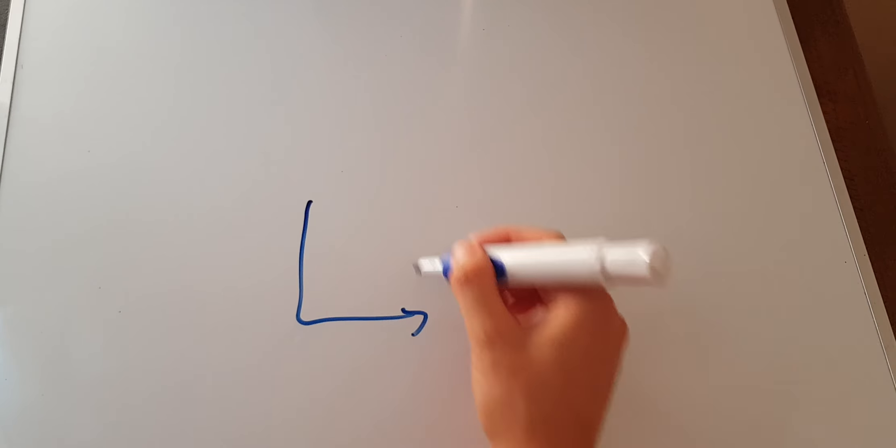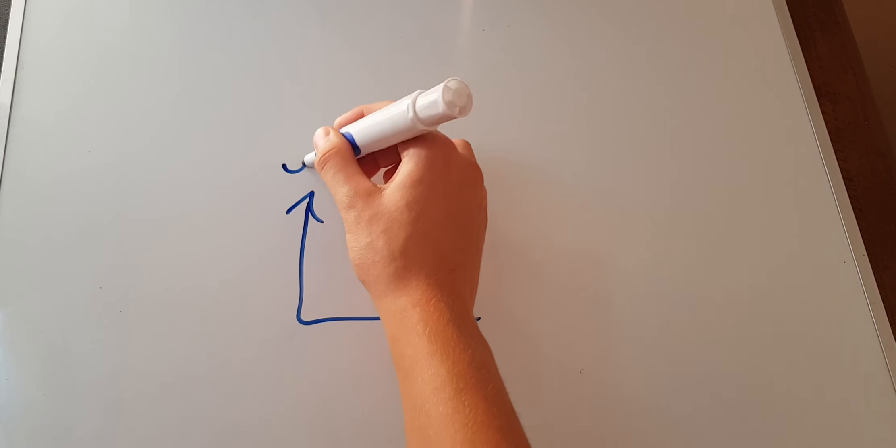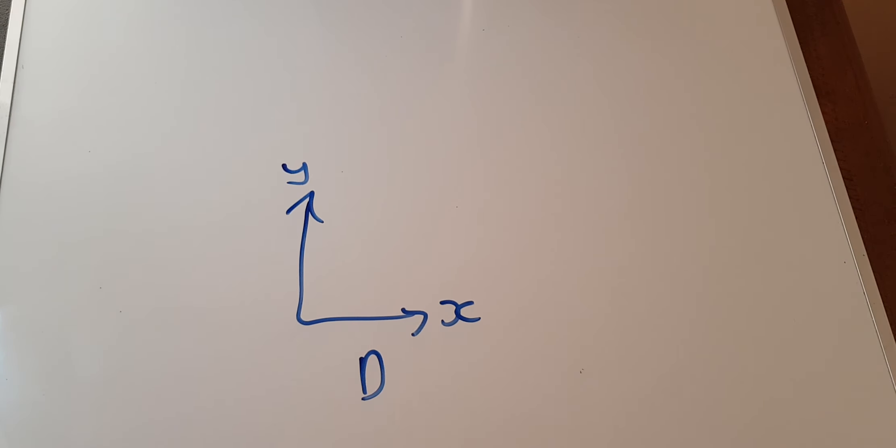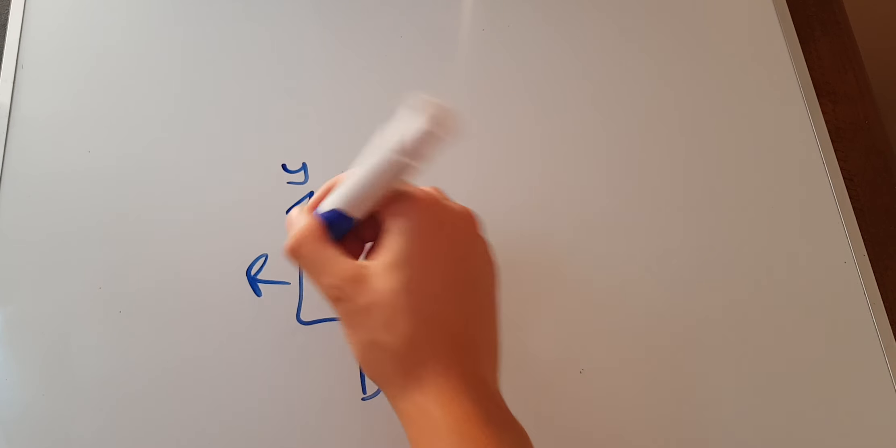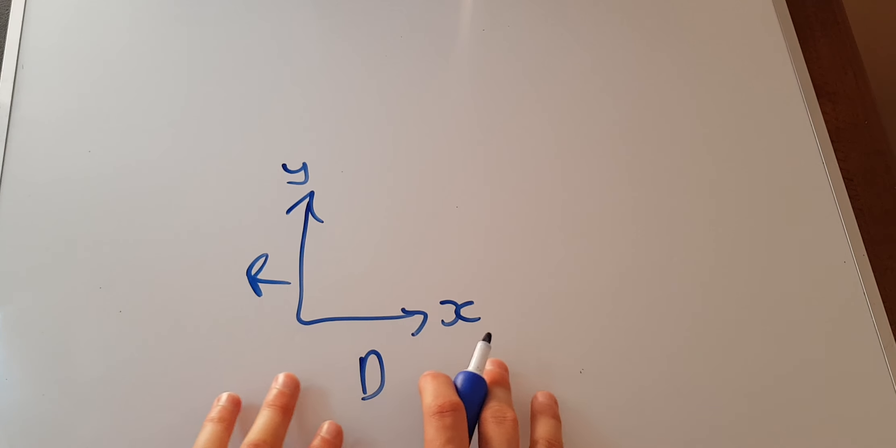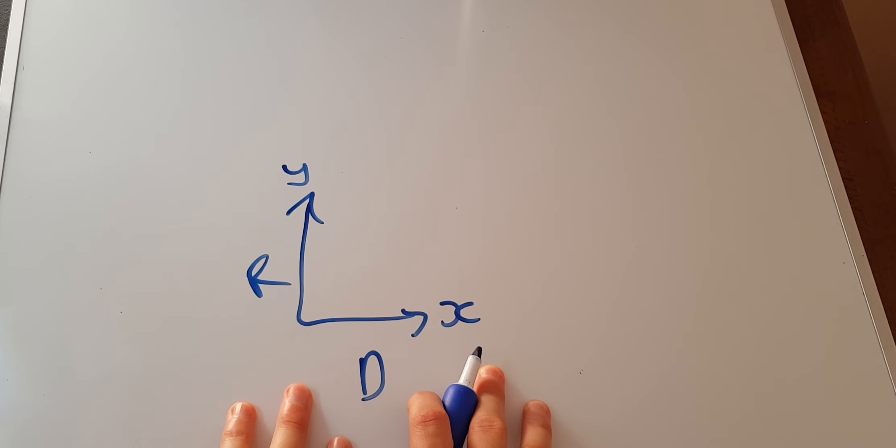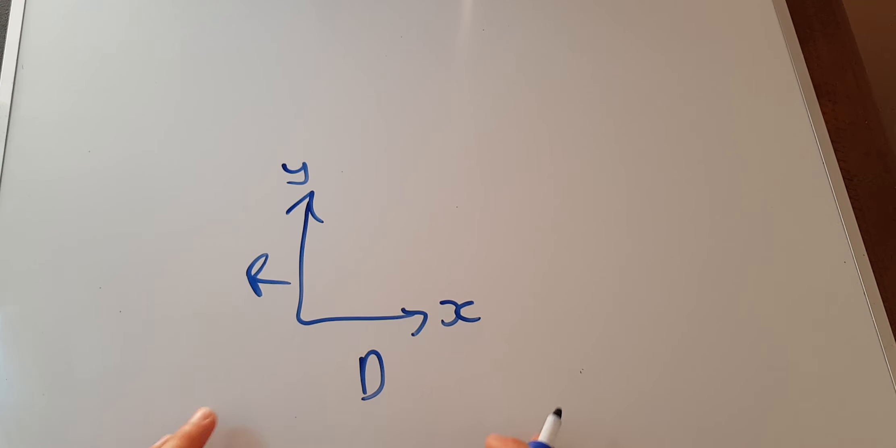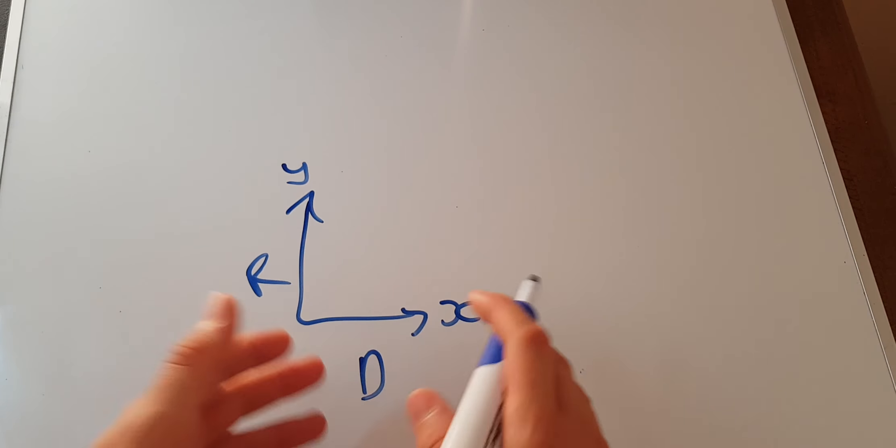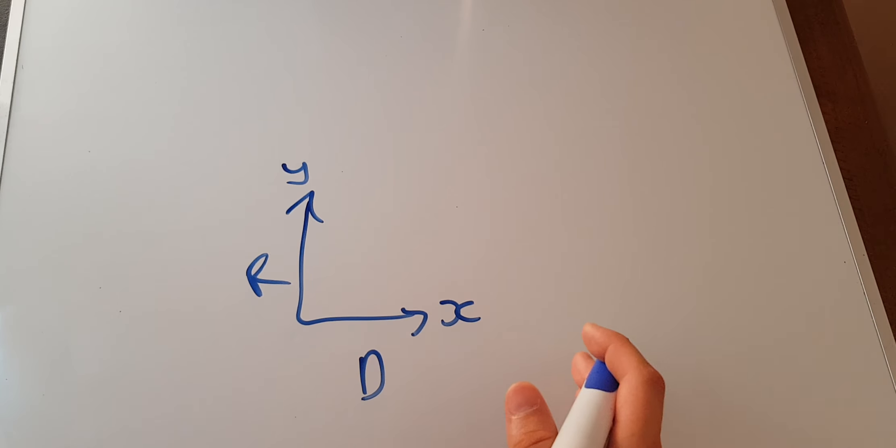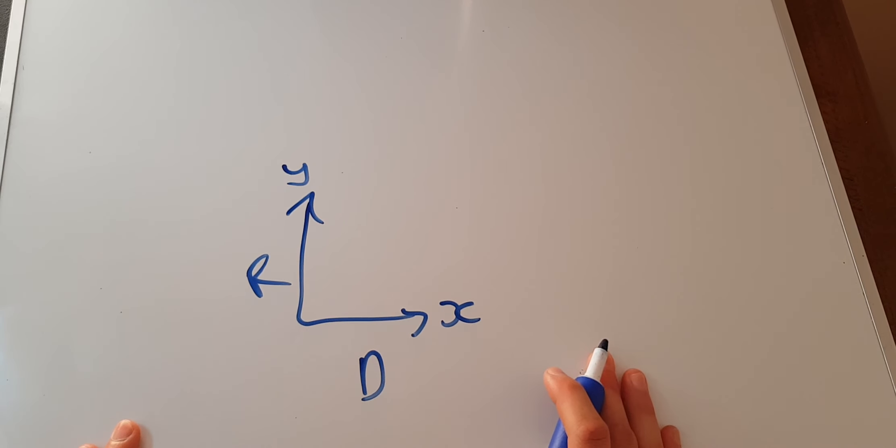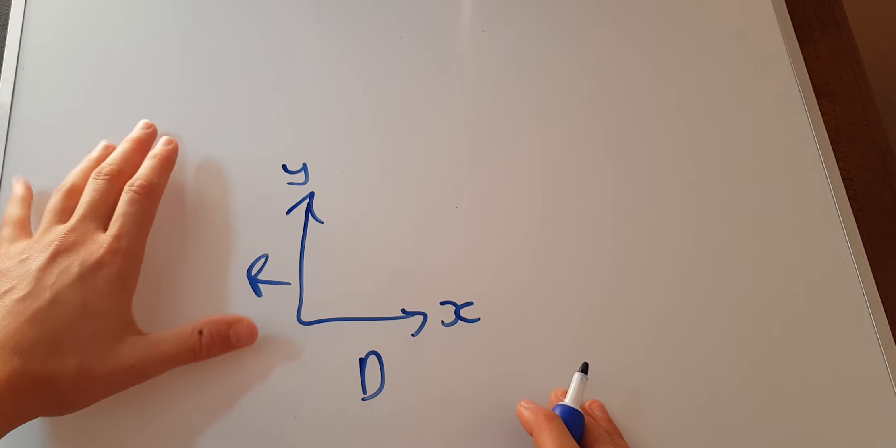And so when you're drawing graphs, it is extremely important to state your domain. So there's your domain. Now your range is however the independent variable, or the dependent variable reacts. This is the dependent variable when the independent variable is manipulated in some way. So the range is just all the values that are possible from this relationship.